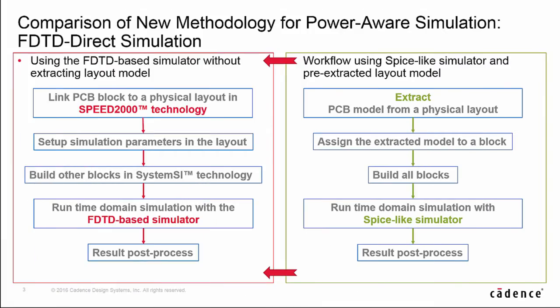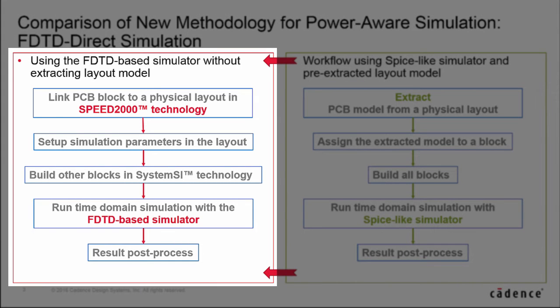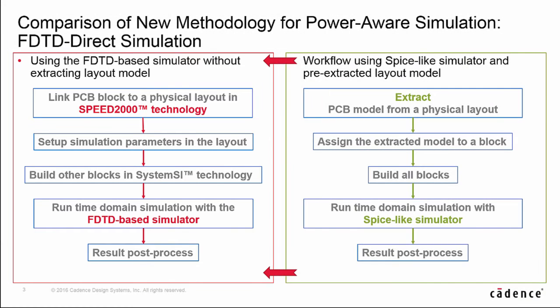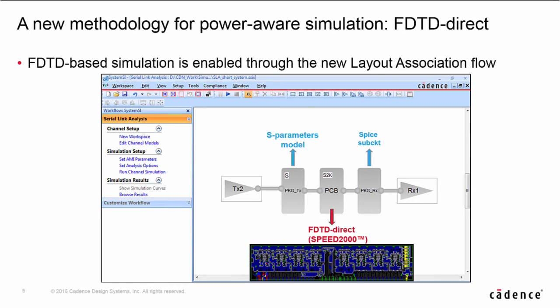In the new release of system SI, we added a new flow. For simulations with non-ideal power supply, instead of extracting a model from a layout, we link a block in system SI to a board or package directly. There is no model extraction anymore, and the simulator is not SPICE-like but FDTD-based. It gives users the advantages of both environments — physical layout and system simulation — plus the FDTD-based simulator to take into account any power and signal interaction.